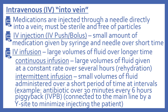First we'll look at the intravenous or IV route, which literally means into the vein. These medications are injected through a needle directly into a vein and must be sterile and free of particles. There's IV injection, also known as IV push or bolus — a small amount of medication given by syringe over a short time. There's also IV infusion, where large volumes of fluid are given over a longer time. This includes continuous infusion — a large volume at a constant rate over several hours, such as for rehydration — and intermittent infusion, where small volumes are given over a short period at intervals, for example an antibiotic given over 30 minutes every six hours, also called piggyback or IVPB, connected to the main line by a Y-site to minimize needle sticks to the patient.